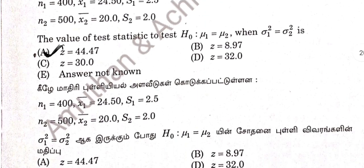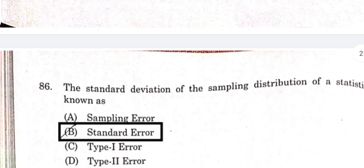Question 85: Option E. This involves two samples with large samples. Solving it gives 64. Option E is correct.